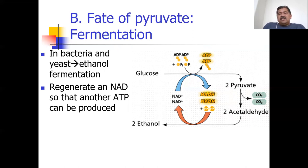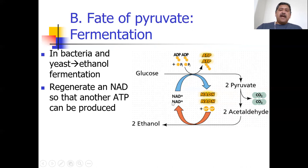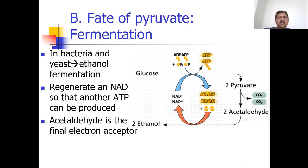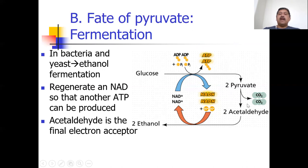It's like having a coupon for a hundred dollars off tires — if you can't get to the store, you can't use it. Same with these NADHs: you have them but can't cash them in. Instead, someone offers to change your NADH back to NAD, which lets you pop it back into the second half of glycolysis to make another ATP. It's not 36 ATPs, but it's more than zero. In ethanol fermentation, acetaldehyde is the final electron acceptor.